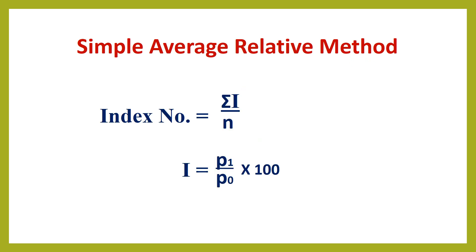The next unweighted method is the simple average of relatives method. In this method, the price relative for each item is found out. The price relative is current year price divided by base year price into 100, that is P1 divided by P0 into 100, denoted as I. This I is put into the formula: index number equals Sigma I divided by N. Thus, the average of these relatives is found using this formula.